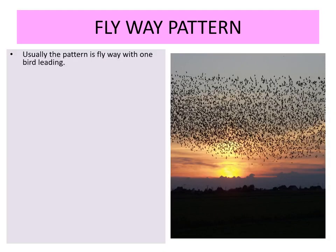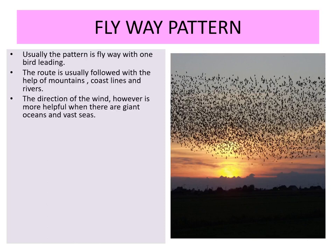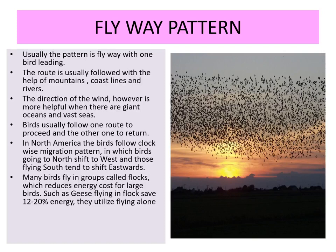Flyway pattern: usually the pattern is a flyway with one bird leading and a V-shaped formation. The route is usually followed with the help of mountain coastlines and rivers. The direction of wind is more powerful when crossing giant oceans and vast seas. Birds usually follow one route to proceed and another to return. In North America, birds follow a clockwise migration pattern — those going north shift west, and those flying south tend to shift eastward. Many birds fly in groups called flocks, which reduces energy cost for large birds such as geese, saving 12 to 20 percent energy.